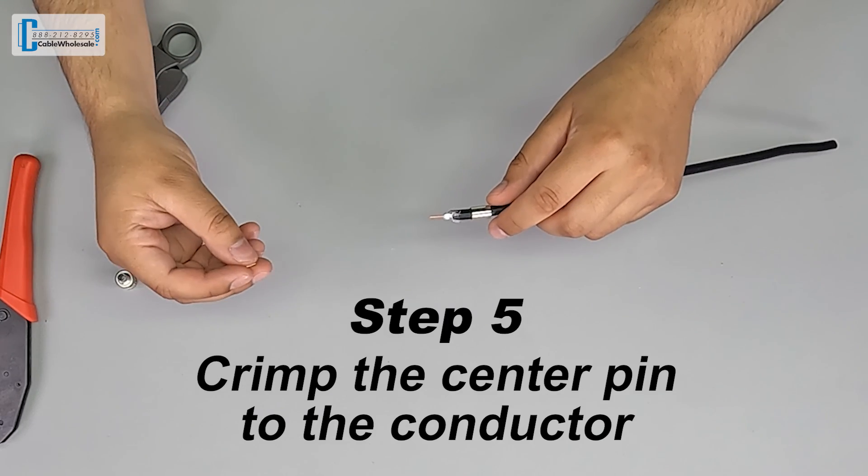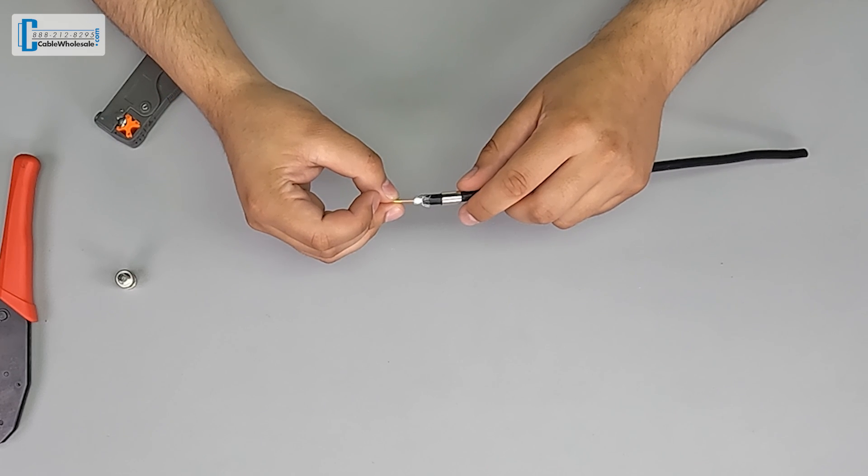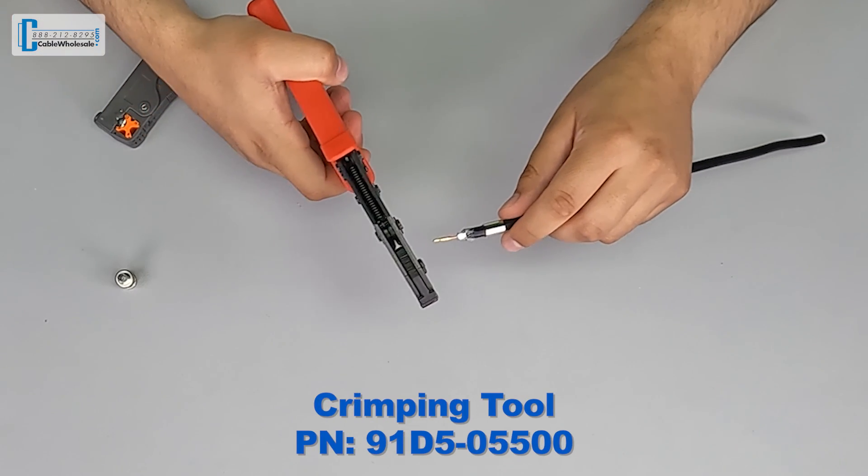Now for step five, we're going to grab the center pin, put it onto the center conductor, and we'll use our crimp tool to crimp it down onto the center conductor.